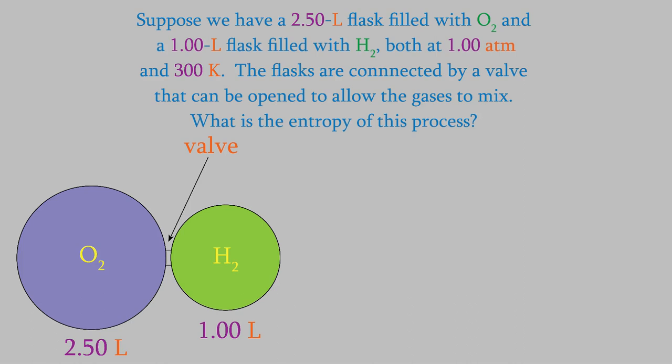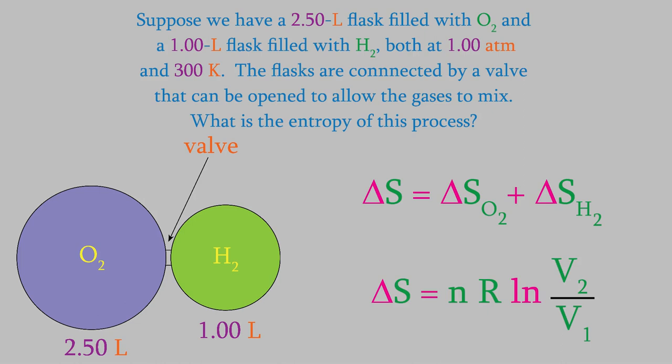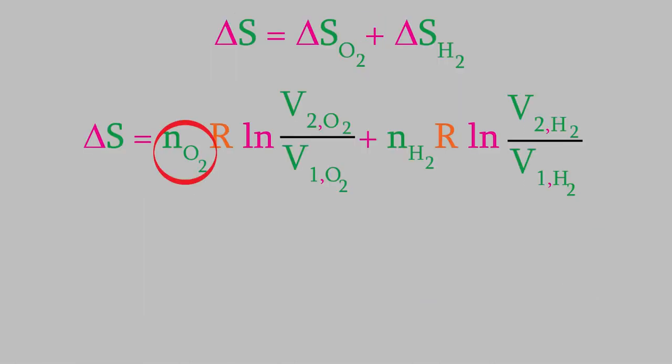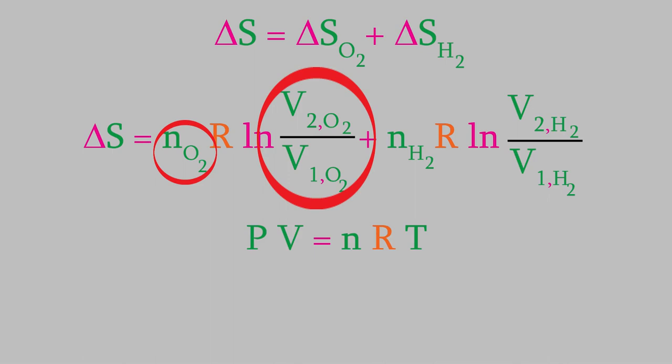The change in entropy will be the change in the entropy of the oxygen, plus the change in the entropy of the hydrogen. The entropy change for each gas is calculated using this equation. So, for example, to calculate the change in entropy for the oxygen, we need to know the moles of oxygen and the volume the oxygen occupies before and after the valve opens. To find the moles, we'll just use the ideal gas law.